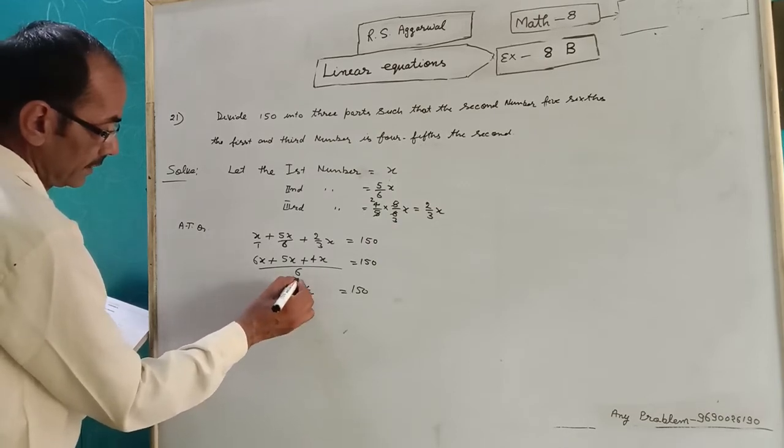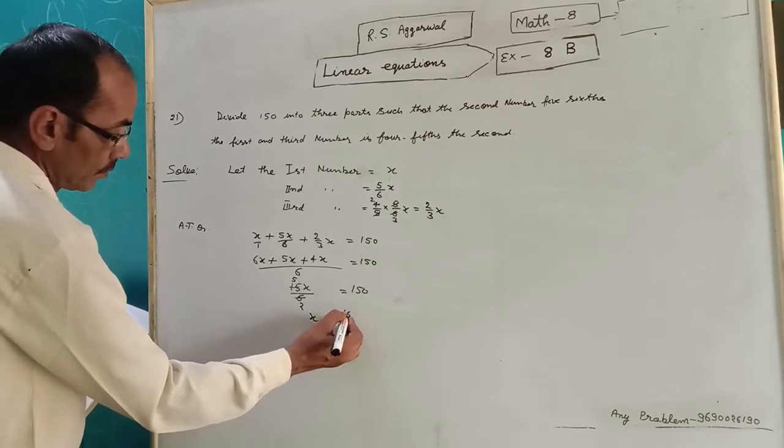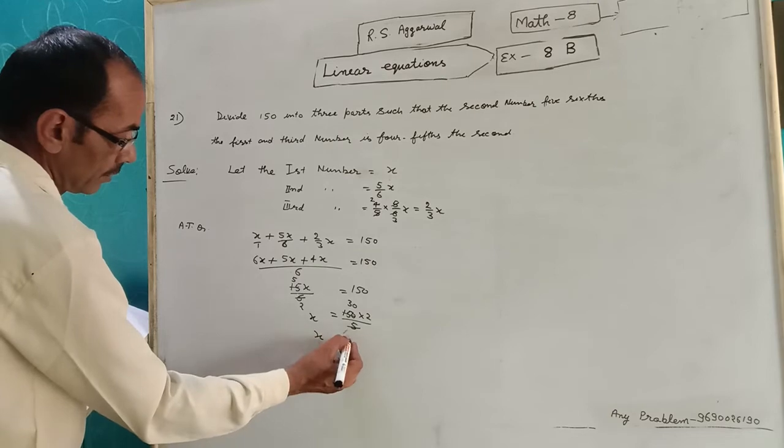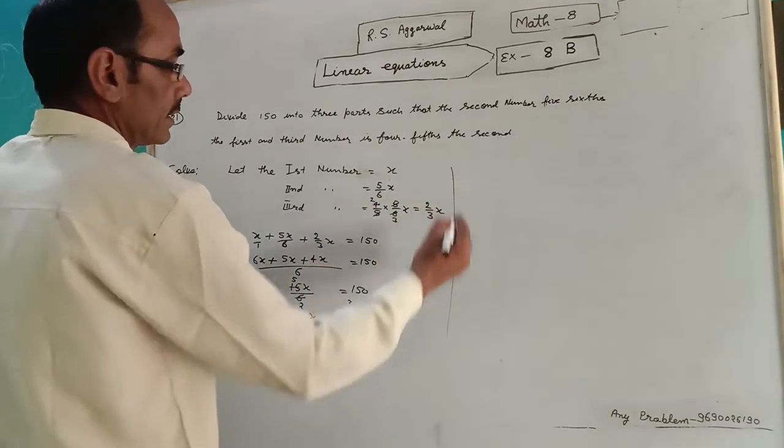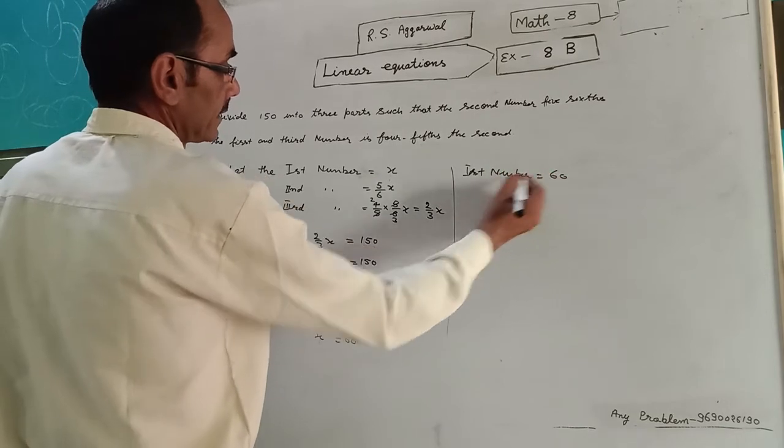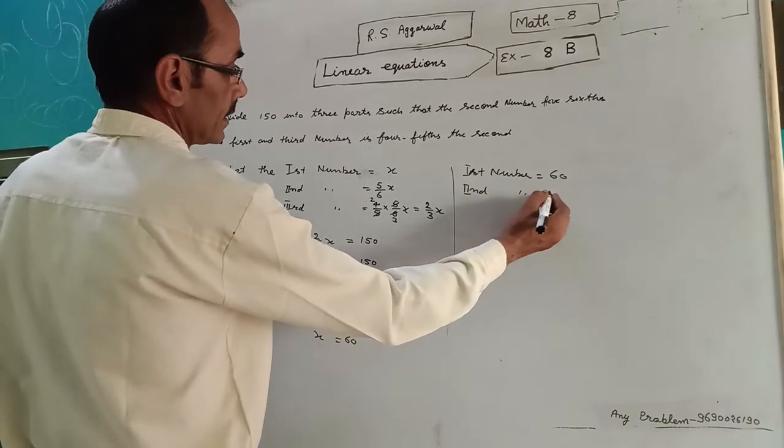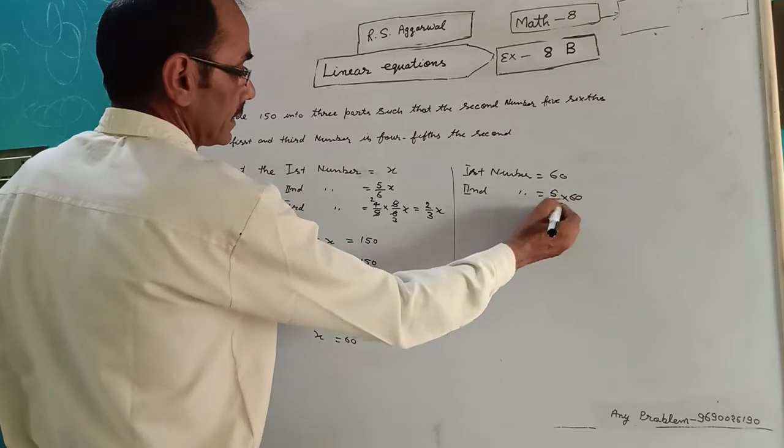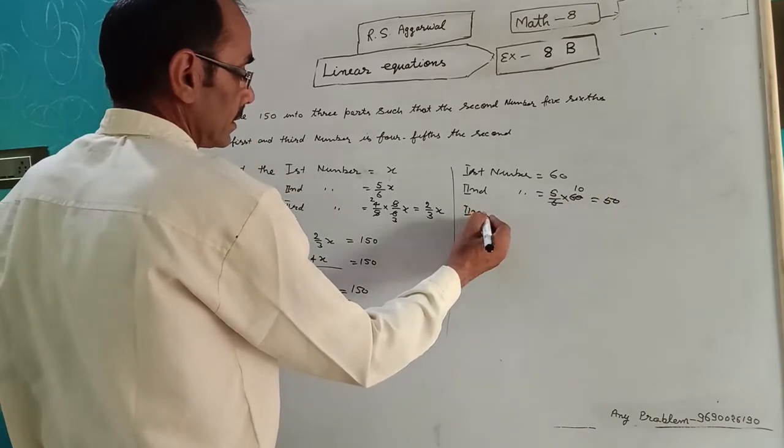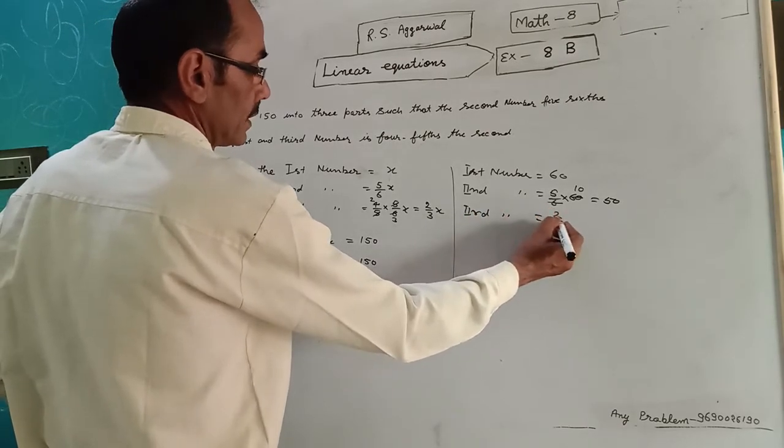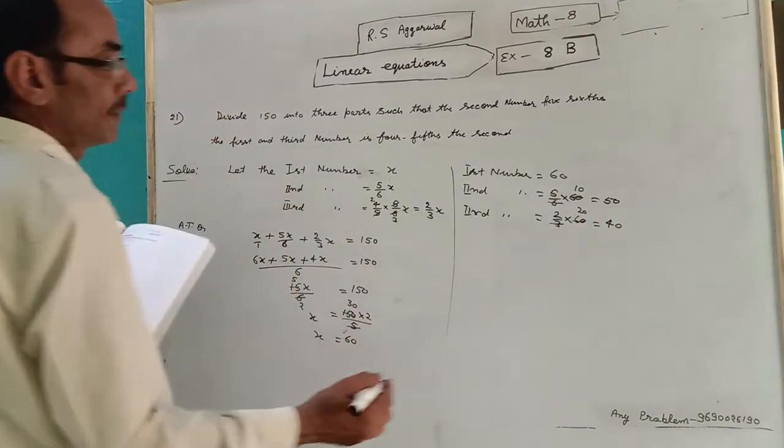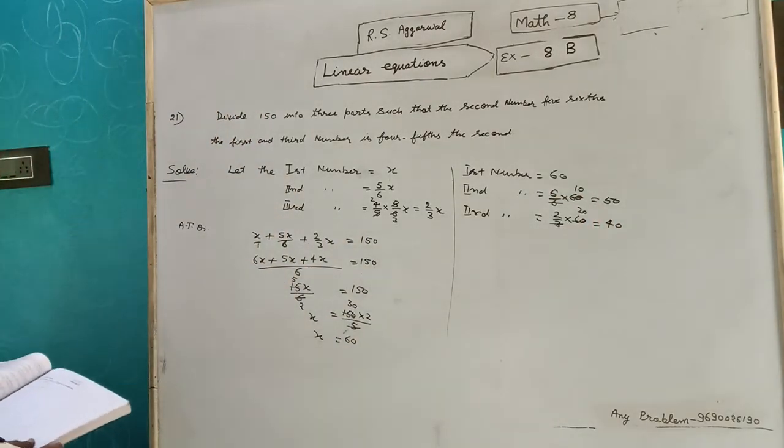Then x will be 150 into 2 upon 5. x is equal to 60. So first number will be 60. Second number will be 5 by 6, 5 into 60, 50. Third number, 2 upon 3 into 60 is 40. 60, 50 and 40 will be the numbers.